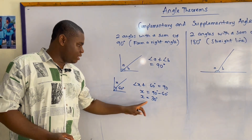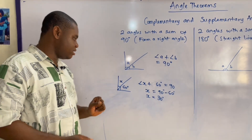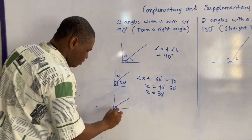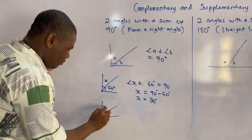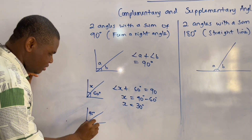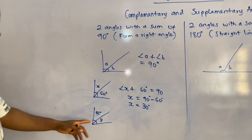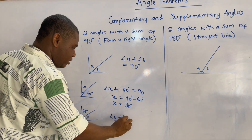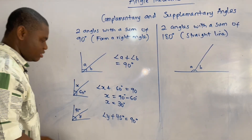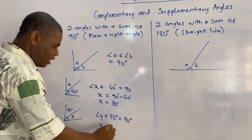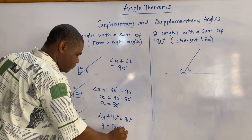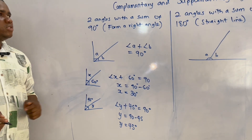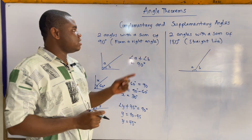Note that 30 plus 60 gives us 90 degrees. For another example, we have 45 degrees and this is y. To find y, angle y plus 45 degrees equals 90 degrees, so y equals 90 minus 45 degrees, giving us y equals 45 degrees. That is the concept of complementary angles.